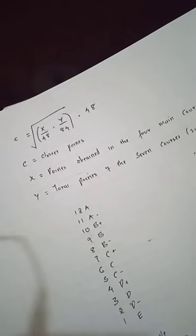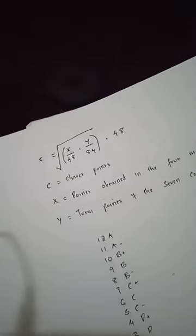You get back to the formula. So formula is C equals x, which is 32 all over 48, multiply by y, which is 62 all over 84, root, then multiply by 48.